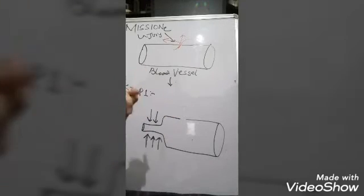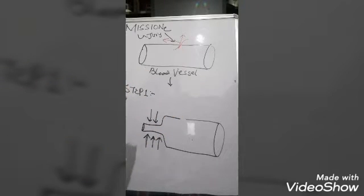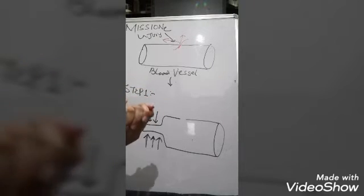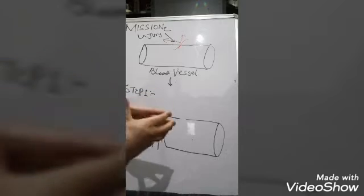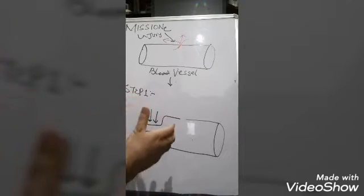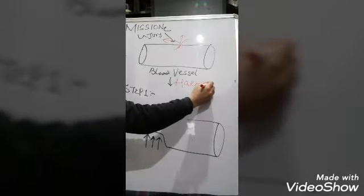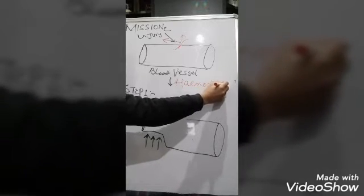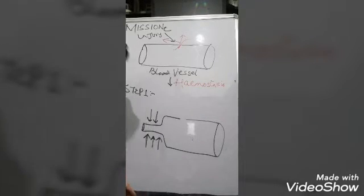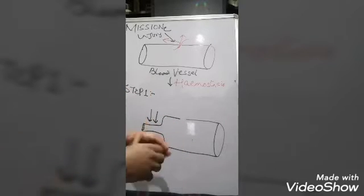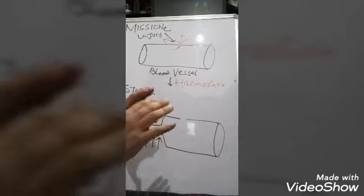There should be a mechanism in the body which tries to stop this bleeding. That entire process involved in the stoppage of bleeding from the blood vessel we call hemostasis. Hemostasis is such a process which will stop bleeding from the body.